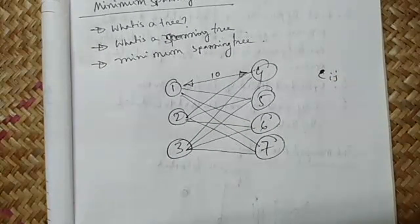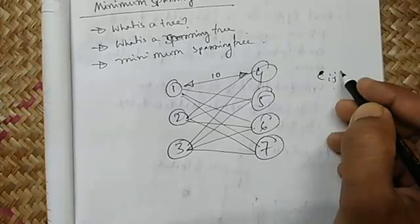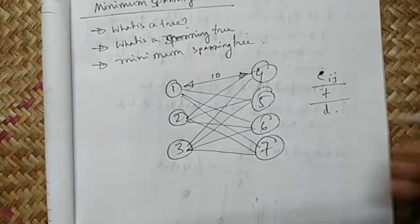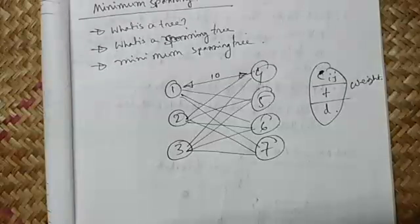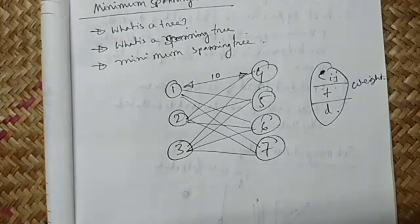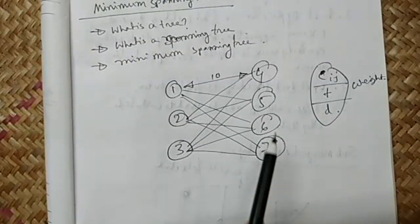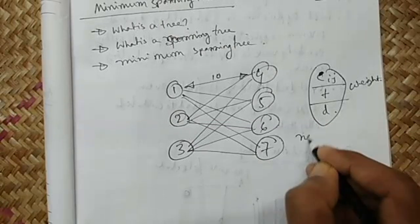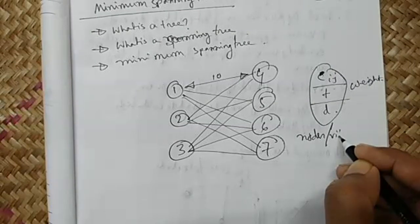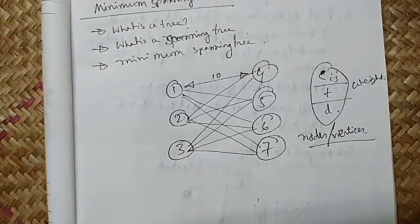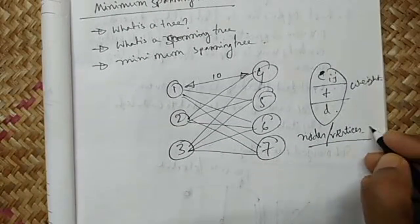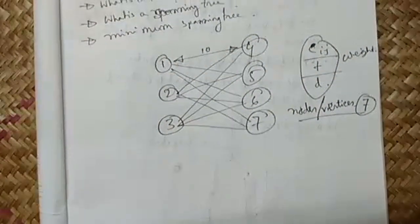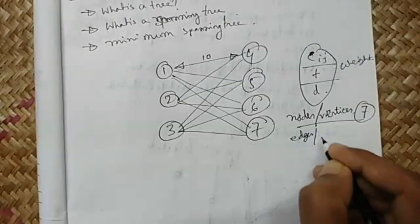A student asks: 'What is c_ij?' c_ij is the cost — it may be cost, time, or distance. These are called the weight of the connection between two nodes. i and j are two nodes. Nodes one, two, three, four, five, six, seven are called nodes or vertices. The lines connecting these nodes are called edges or arcs.